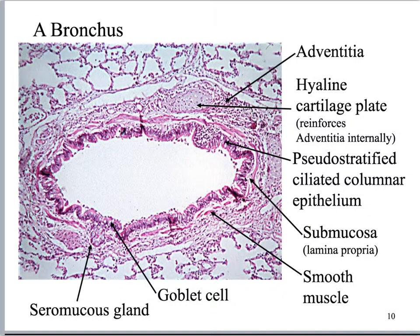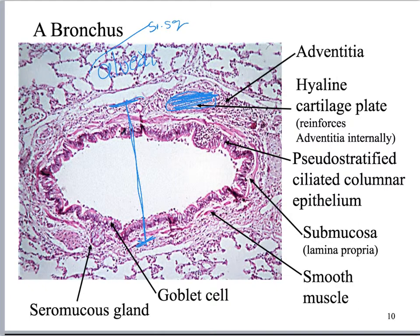Here we're looking at a bronchus. Remember that the bronchus and bronchioles are embedded in the lung, so surrounding it I'm going to see alveoli — and notice that is all simple squamous epithelium. This is the bronchus because I've got fairly large pieces of hyaline cartilage right there. I can see a little bit of smooth muscle, and here I've got my lamina propria and my mucosa lining. It's so large you can even see the little goblet cells in there.